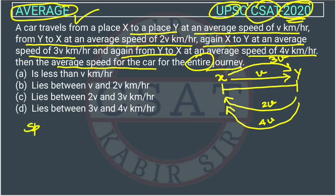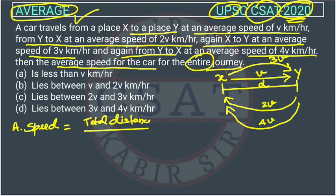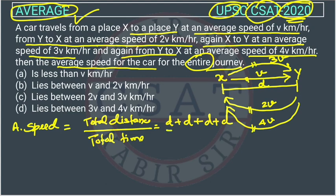We know that the average speed for the entire journey is equal to the total distance divided by total time. Suppose the distance between X and Y is D. The total distance is D plus D plus D plus D — that is 4D — upon T1 plus T2 plus T3 plus T4.